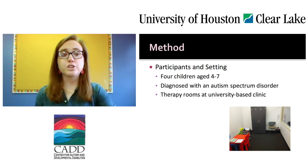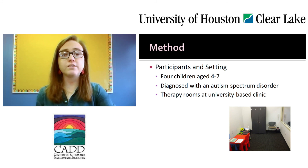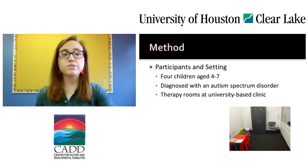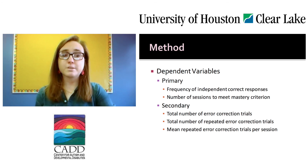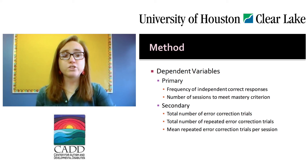Participants included four children who had been diagnosed with autism by professionals unaffiliated with the research. All subjects attended a university-based therapy center for individuals with autism where they received behavior analytic services. Each child was able to sit and work at a table for at least 15 minutes with little to no problem behavior and had no known sensory or motor impairments. The primary dependent variables were the frequency of independent correct responses and the number of sessions to meet mastery criterion. The secondary dependent variables were the total number of error correction trials, the total number of repeated error correction trials, and the mean repeated error correction trials per session.